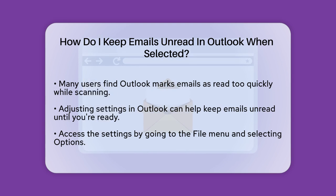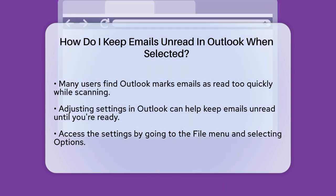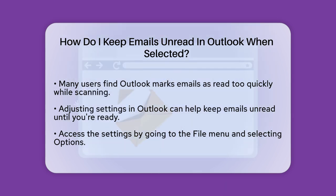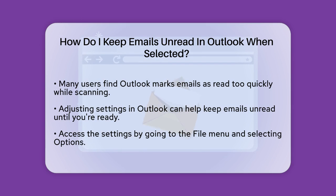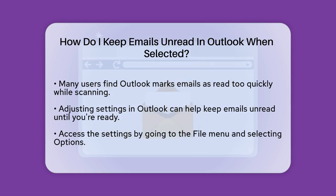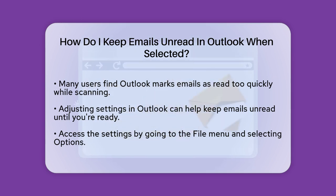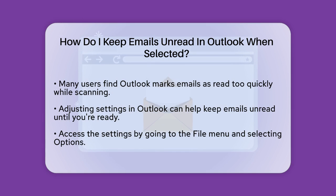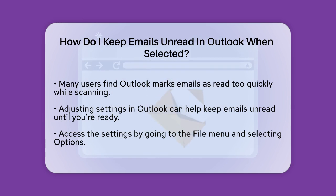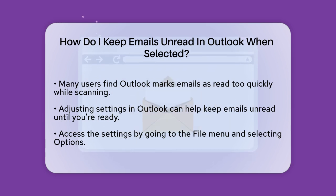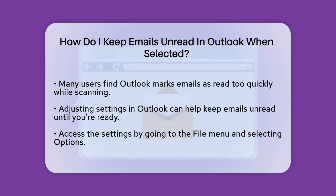First, you need to adjust the settings in Outlook to change how it handles marking emails as read. Here's how you can do it. Go to the File menu and select Options, then navigate to the Advanced tab. Under the Outlook Pane section, click on Reading Pane.